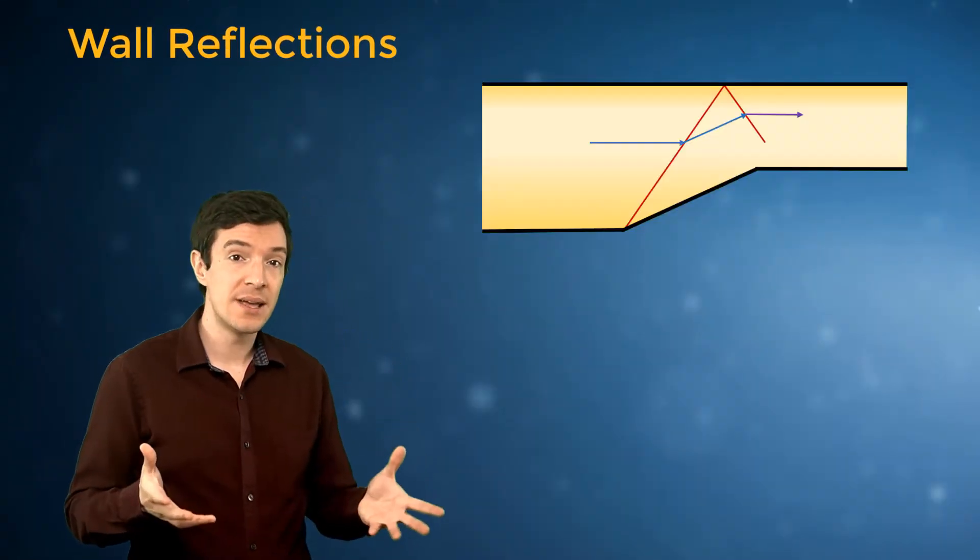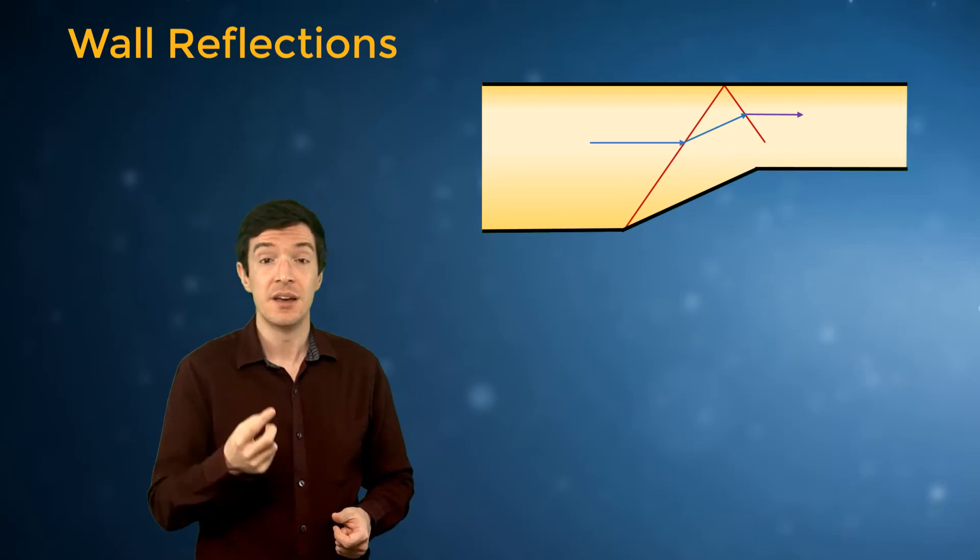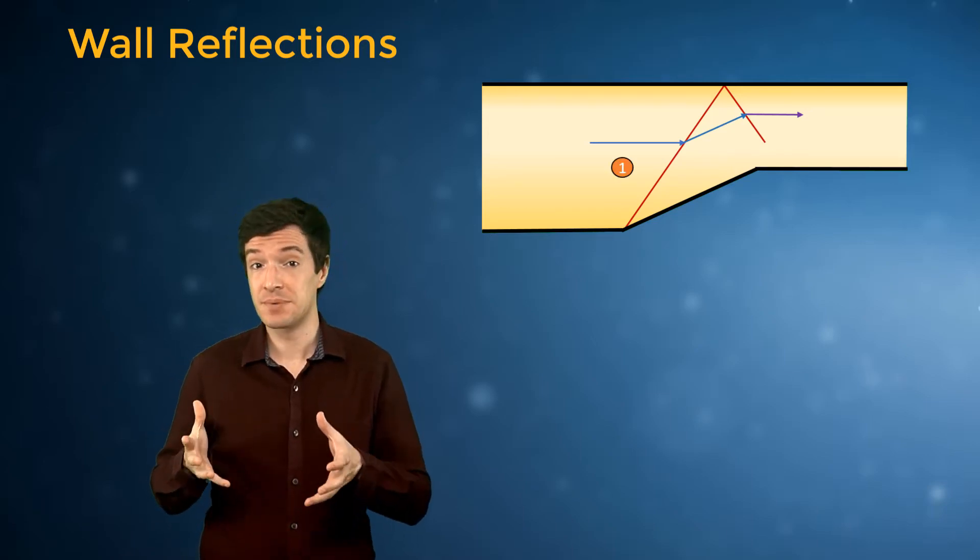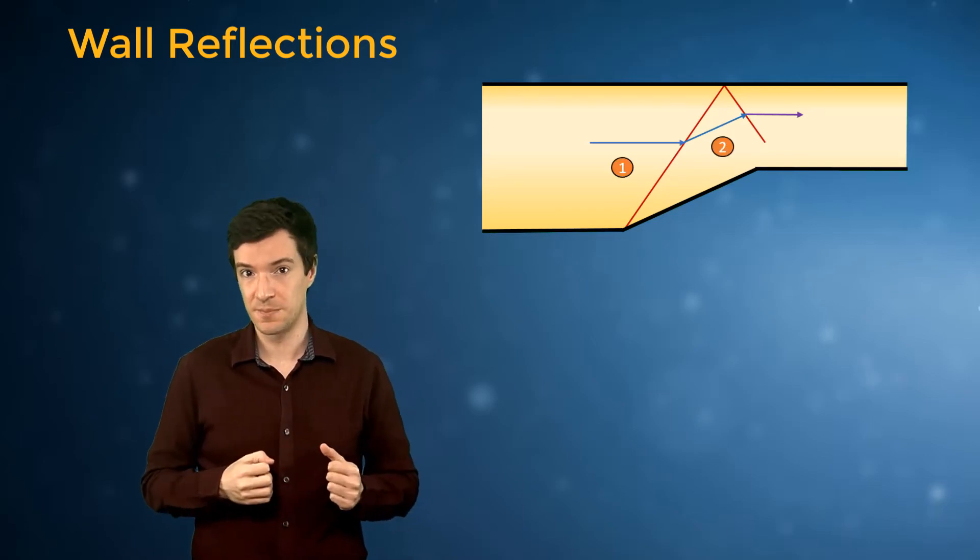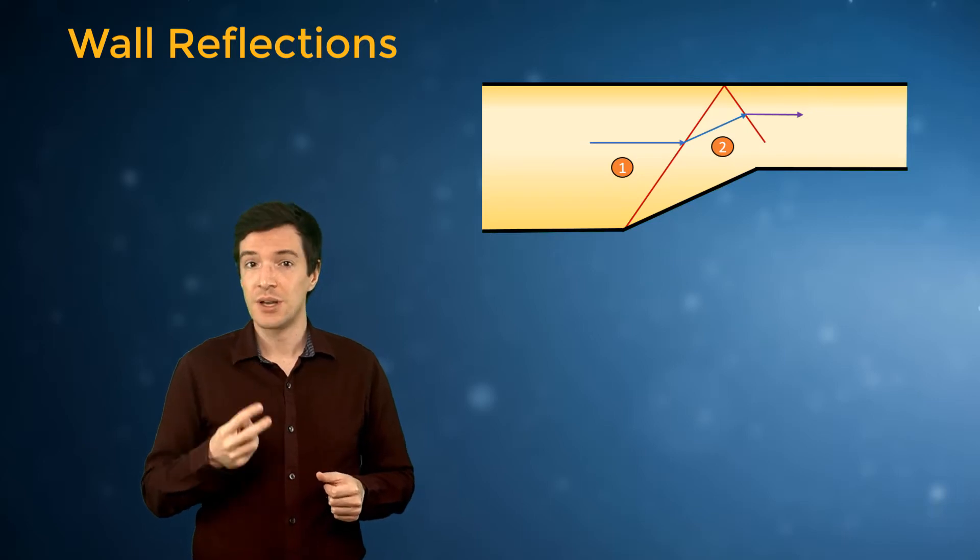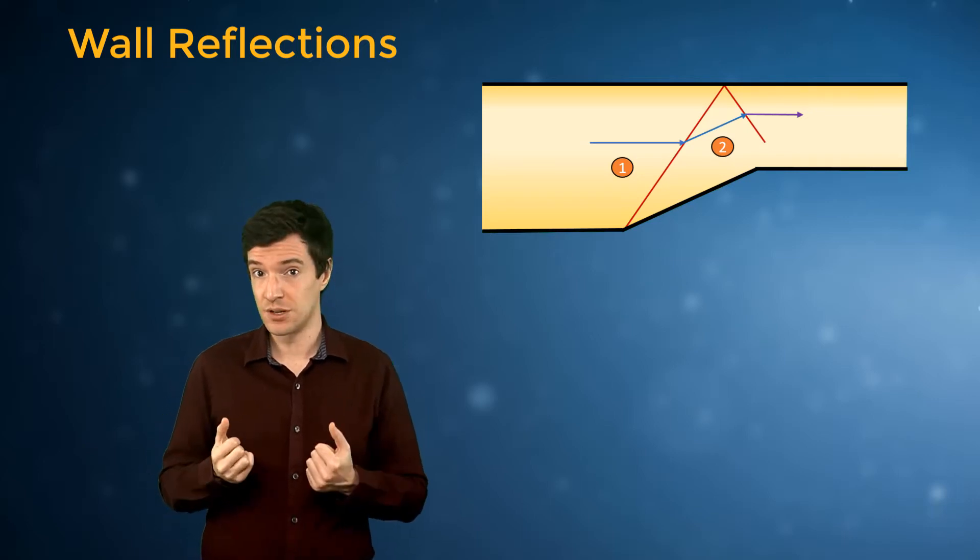For convenience, divide the domain in three regions. Region 1 is upstream the first oblique shock. Region 2 is in between the two shocks, and Region 3 is behind the second oblique shock.